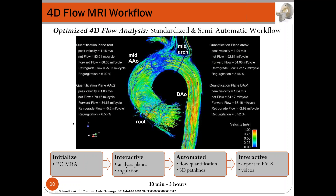Some groups have done a lot of work to standardize and semi-automatize the analysis of this data. This is the workflow we use at Western University. We initialize the 3D phase-contrast angiogram to visualize anatomy, manually place analysis planes along different landmarks in the thoracic aorta as suggested by guidelines — in the aortic root, mid-ascending aorta, mid-arch, and descending aorta. Once planes are located, we run automatic quantification of flow and generate 3D pathlines, obtaining peak velocity, net flow, forward flow, retrograde flow, and regurgitation fraction. We can generate a screenshot report transferable to PACS along with video animations.